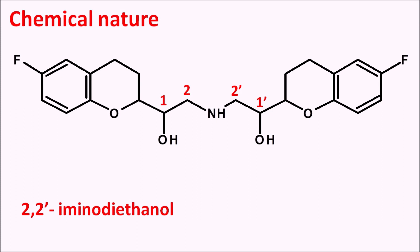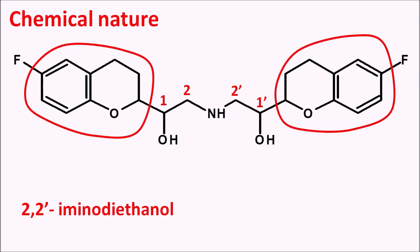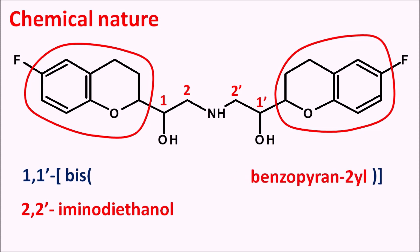To this iminodiethanol, two rings are attached. This ring is nothing but a benzopyran ring. Since both of the rings are similar, we can use the prefix 'bis' and they are attached at 1 and 1 prime. So we can represent this as 1,1 prime-bis-benzopyran-2-yl, which is attached at the second position. This benzopyran ring has some saturation as well as substitution: at the sixth position there is a fluorine group — so 6-fluoro — and it is saturated at third and fourth position, so 3,4-dihydro. That is the complete name of nebivolol, which is an iminodiethanol derivative.